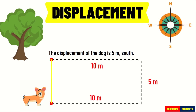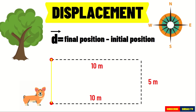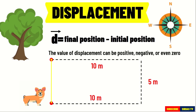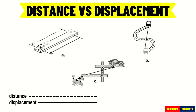We can find the displacement mathematically by finding the difference between the final and initial position of an object. Unlike distance, the value of displacement can be positive, negative, or even zero. Let us find out more about distance and displacement by looking at the following pictures. Take note that the distance traveled by an object is represented by broken lines and its displacement is represented by continuous lines.